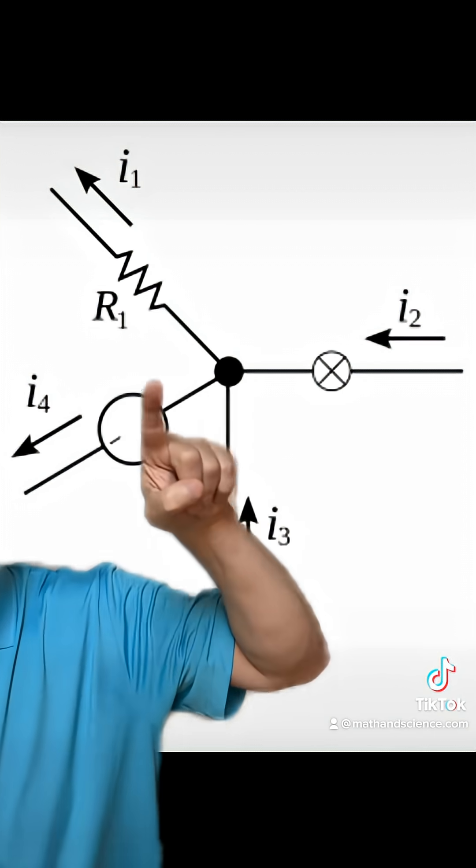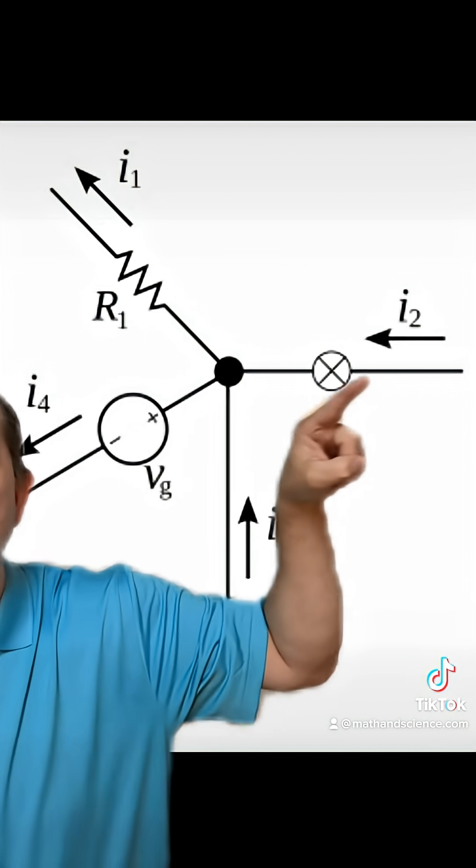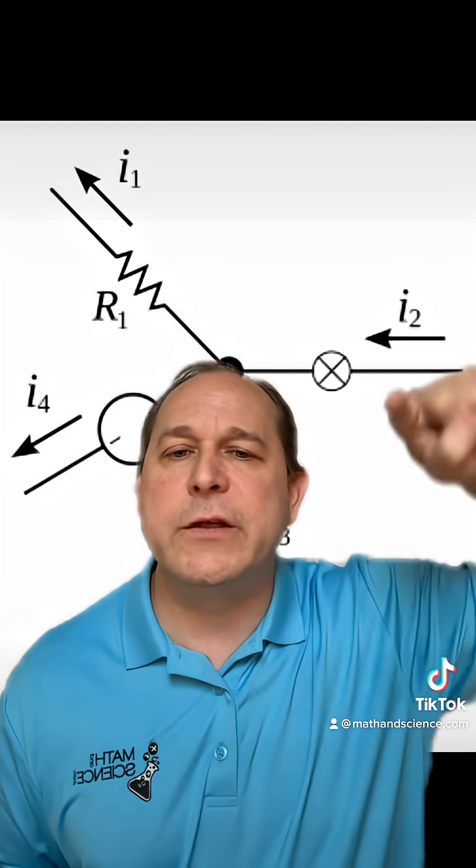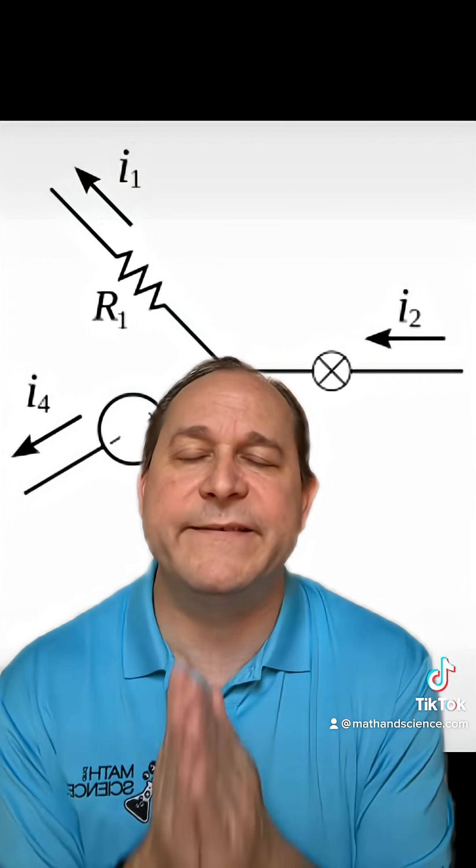Let's say you have a node here, there's a voltage source with some current flowing through it, a resistor with some current, there's some light bulb or something with some current and something else going on there. When you add all of these currents up, keeping track of their signs, they must add up to zero because of conservation of mass.